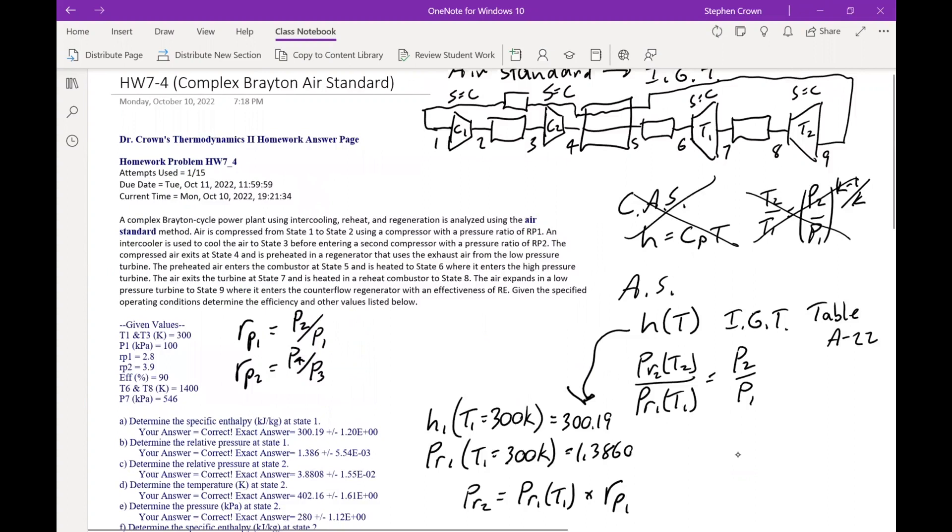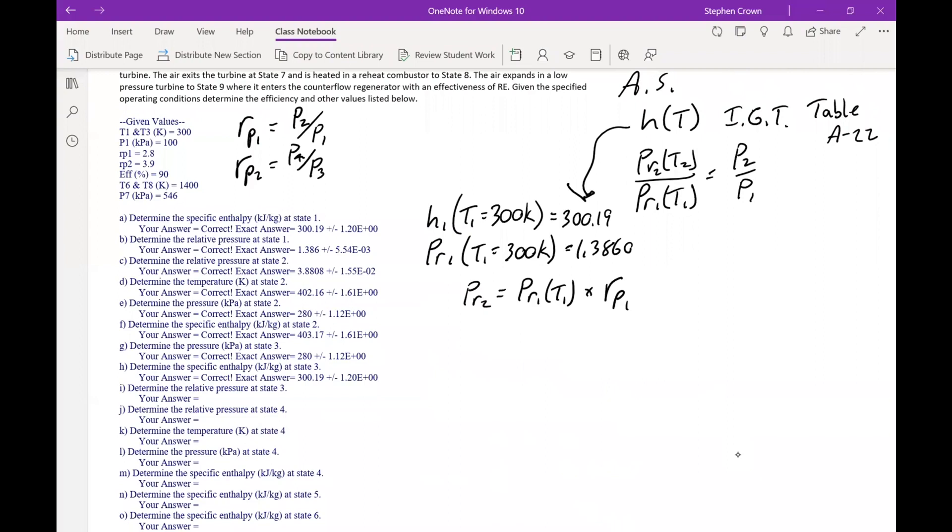So then we find PR2 that way. Once we find PR2, we found enthalpy at state 1, we found the relative pressure at state 1, the relative pressure at state 2, and then the temperature at state 2. Once we have PR2 from the ideal gas tables, we can find T2 as a function of PR2. So we solve for PR2, and then we go to the tables with that PR2. So we look in the PR2 column. We're probably going to have to interpolate, and we'll find what T2 is. We can do the same thing for enthalpy of 2.